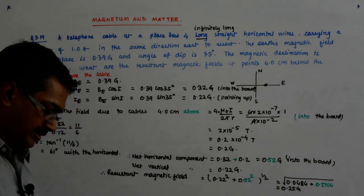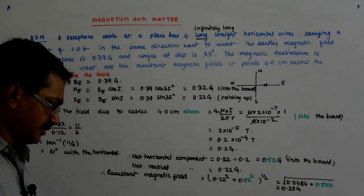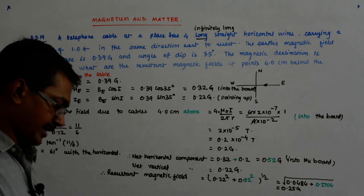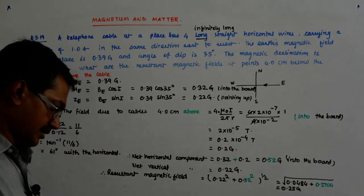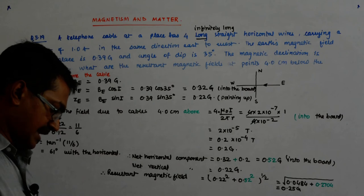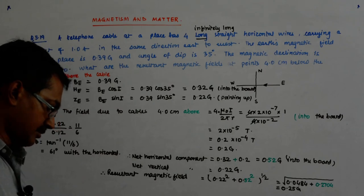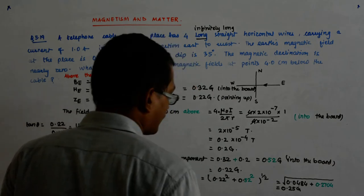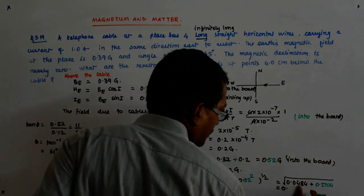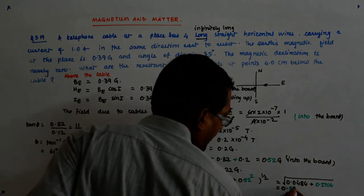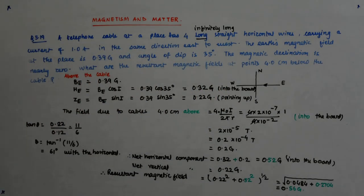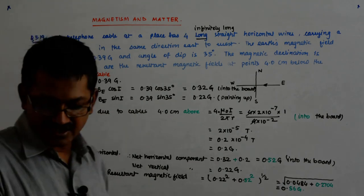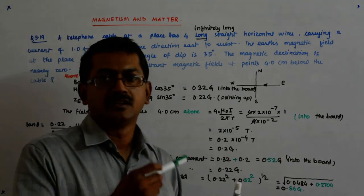And this plus 0.0484 gives me 0.3188. And root of that is 0.564. So this is equal to 0.56 GAUS. So the net is 0.56 GAUS.